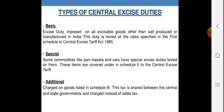Basic या मूल उत्पाद शुल्क — यह उन वस्तुओं पर लगता है जो हमारे देश में बनती हैं। This duty is levied at a rate specified in the first schedule of Central Excise Tariff Act 1985. किस दर पे सरकार ये उत्पाद शुल्क वसूले — इसका इंदराज Central Excise Tariff Act 1985 की सारणी में दिया है और उन्हीं दरों के अनुसार यह कर आरोपित किया जाता है।